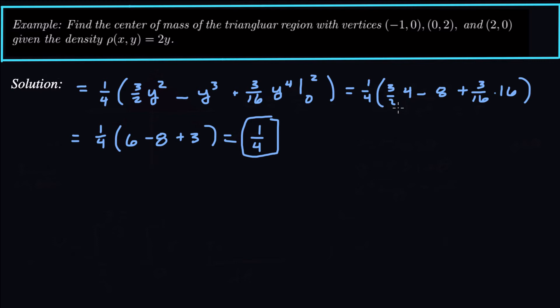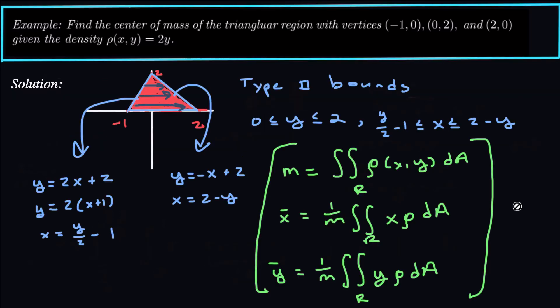So the x-component of the center of mass is 1/4. Looking at this triangular region, it's not symmetric — there's more lamina to the right of the y-axis, so there should be more mass there. This turns out to be the case from our computation, since x-bar = 1/4 is positive.